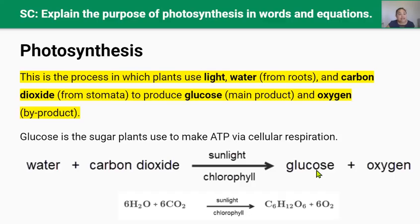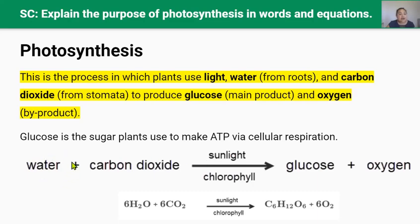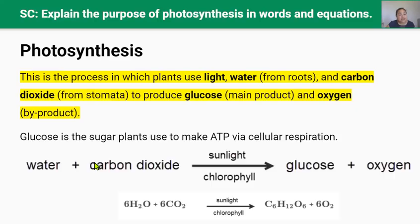We'll cover more about ATP and the process of respiration in more detail in video 6. But for now, for photosynthesis to occur, plants need water, carbon dioxide, and sunlight. This water is absorbed from the soil via osmosis through the roots. This carbon dioxide is taken up by diffusion through very small pores on the underside of its leaves, called stomata. And the sunlight is captured by chlorophyll in chloroplasts.